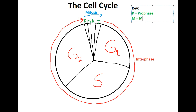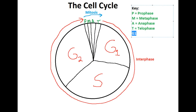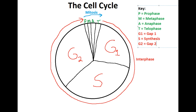So here's our key: prophase, metaphase, anaphase, and telophase — those are all part of mitosis, which is the smallest section of the entire cell cycle. And then G1, S, and G2 collectively make up interphase, which is the vast majority of where the cell spends its time.